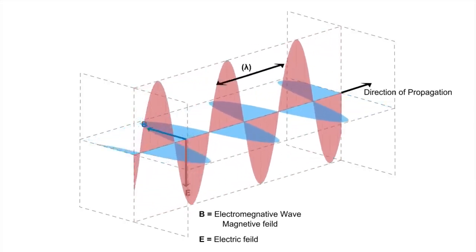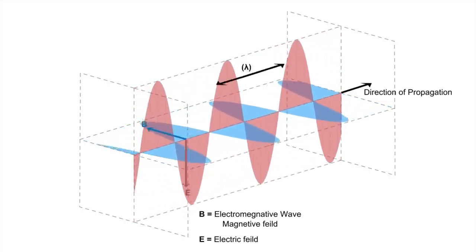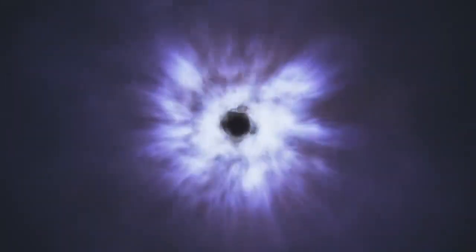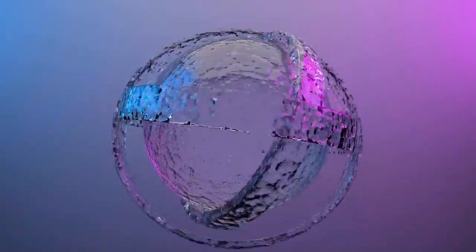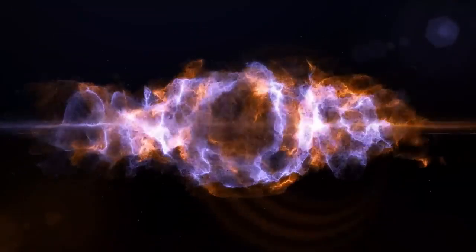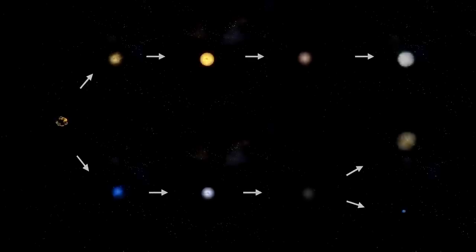Several explanations have been proposed for the dimming. One idea is that Betelgeuse is entering a late phase in its life cycle, moving closer to a supernova. Another suggests that the dust it expelled simply blocked our view. A third theory points to structural changes in the star's outer layers, which could affect how bright it appears. While no single explanation has been confirmed, the findings point to dramatic internal changes and raise the possibility that Betelgeuse might explode sooner rather than later.